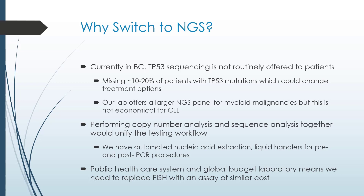Our lab does offer a larger NGS panel for myeloid malignancies that does cover TP53, but it's not an economical option for CLL patients. Furthermore, having an NGS platform to detect sequence changes and FISH analysis to detect copy number changes does not provide a streamlined option. Having an NGS platform that could perform both copy number and sequence analysis would allow us to unify our workflow. We also have the capability to perform 200 FISH tests per year by NGS, as we have automated nucleic extraction and liquid handlers for both pre and post PCR. Because we work within a public healthcare system and from a global budget, we need to assess similarly cost-effective assays to replace our current FISH platform.